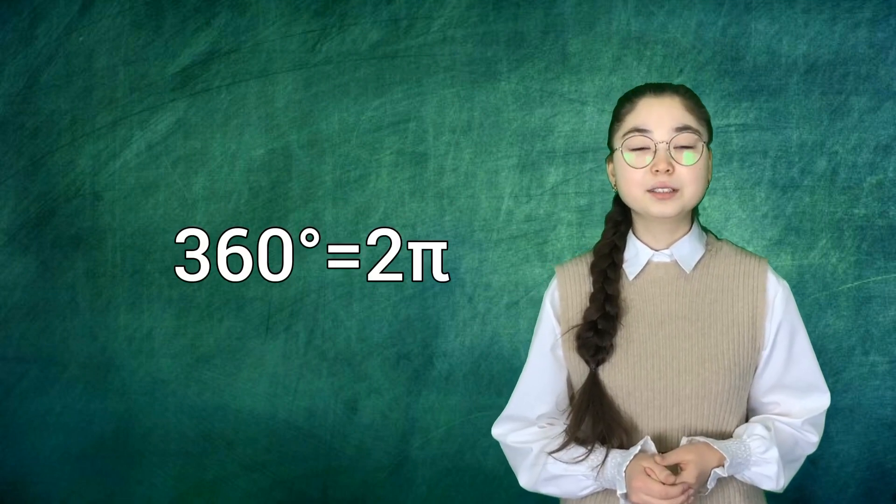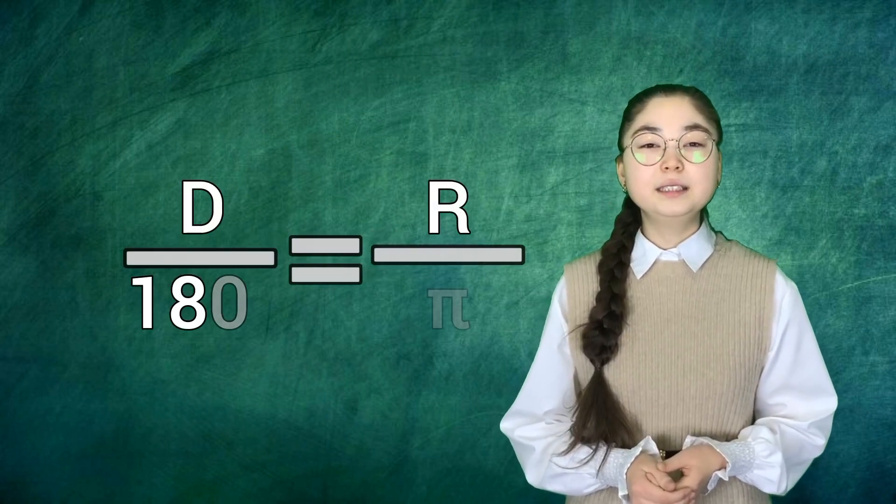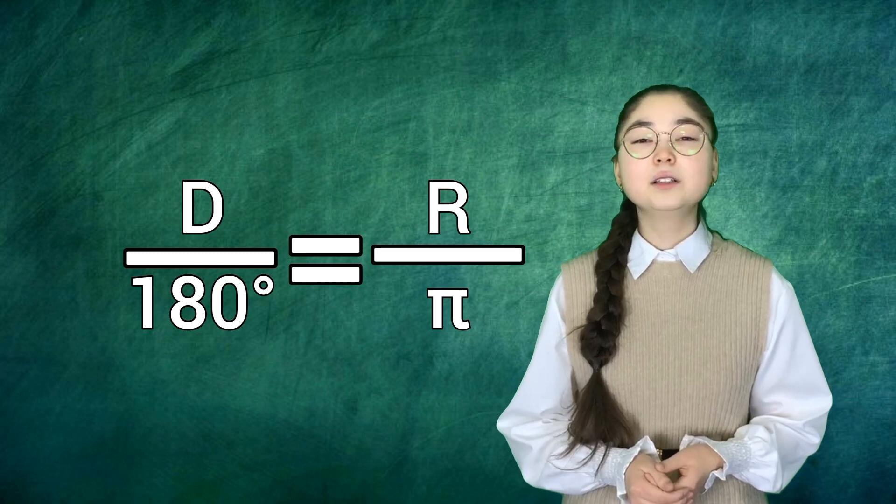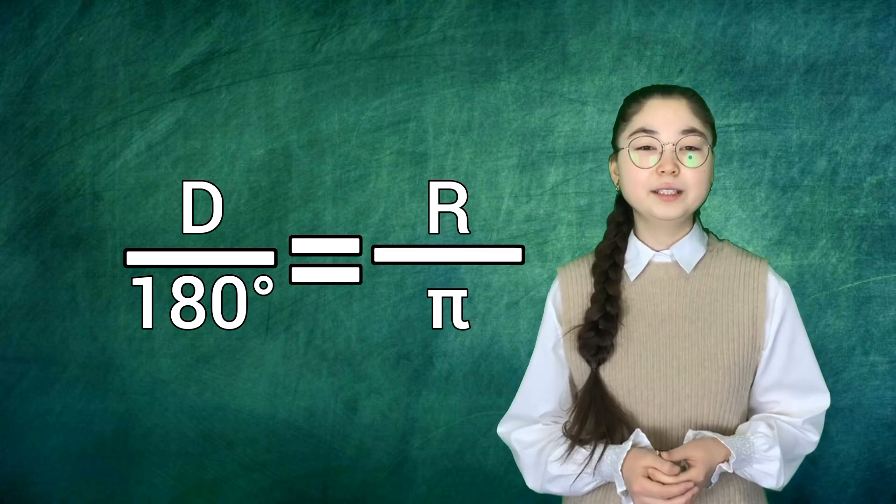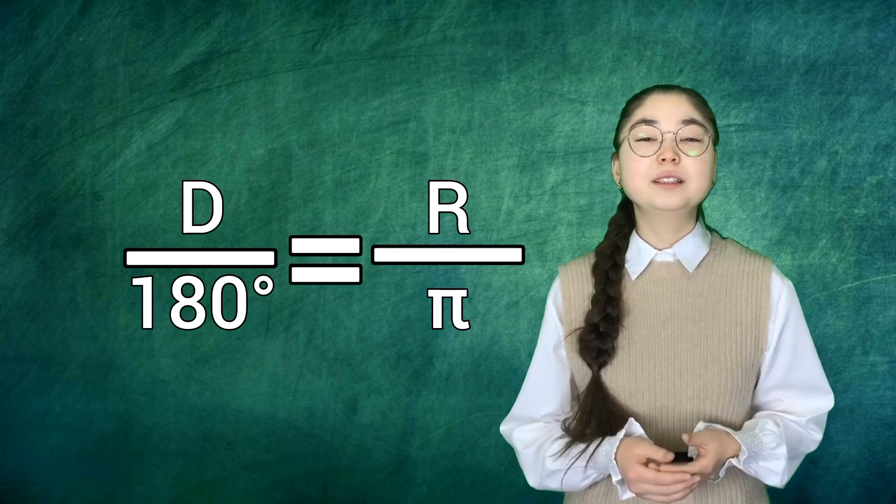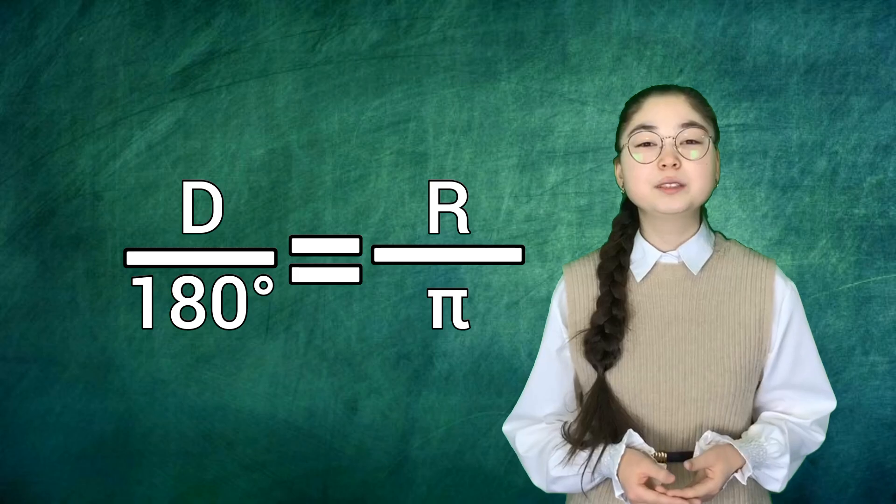We have seen that the complete angle of a circle measures 360 degrees, which equals 2π radians. We can use the formula d over 180 degrees equals r over π to relate degree and radian measurements, where d and r represent the degree and radian measurements respectively.